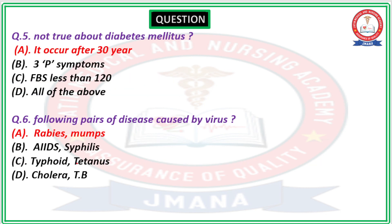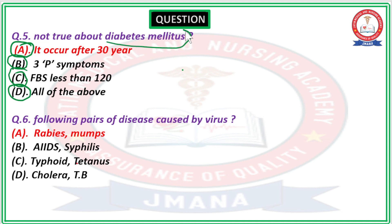Question number 5 asks what is not true about diabetes mellitus. Four options are given: Option A — it occurs after 30 years; Option B — it has 3P symptoms; Option C — fasting blood sugar is less than 120; Option D — all of the above. The 'not true' answer is that diabetes mellitus does not necessarily occur after 30 years — it can occur in any age group. The 3P symptoms — polyphagia, polydipsia, and polyuria — are indeed present in diabetes mellitus.